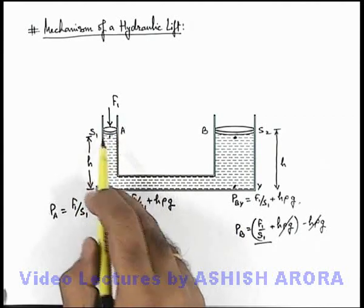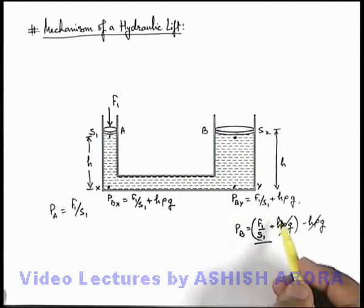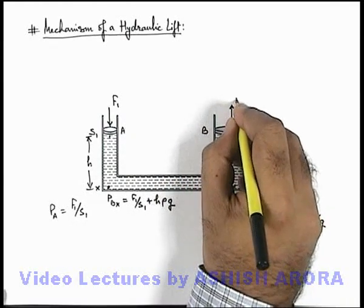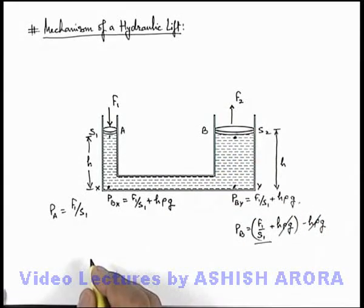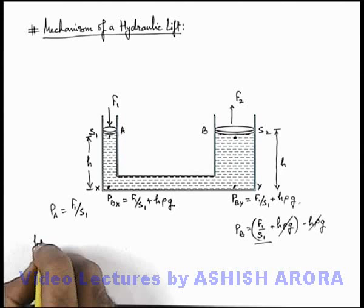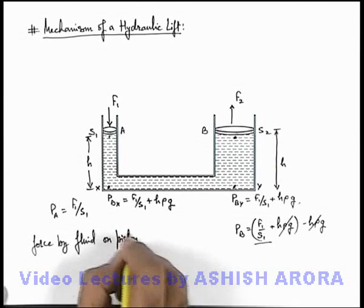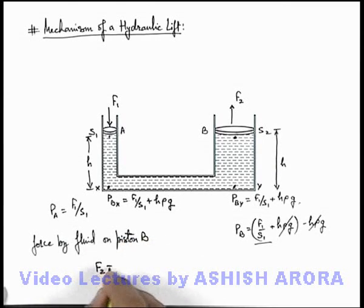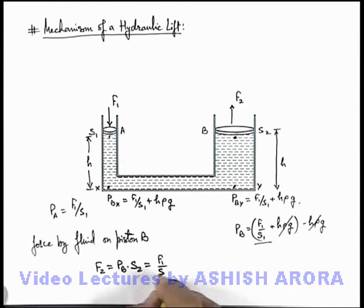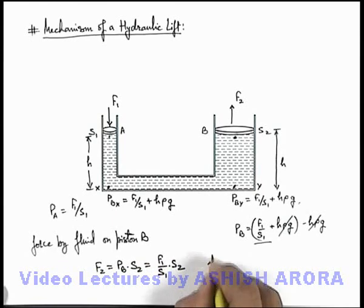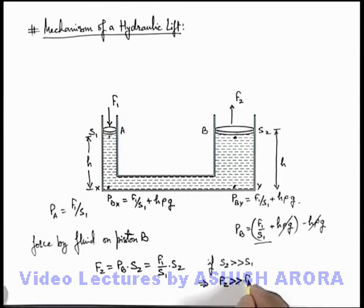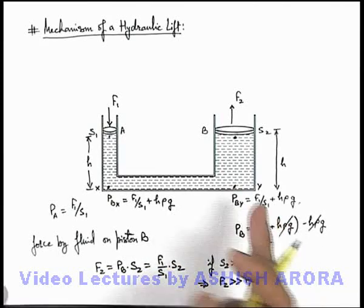So if this force is increased, the pressure at point A increases and correspondingly pressure at point B will also increase. This piston will experience an outward force F2. The force applied by the fluid on piston B is F2, which equals pressure at point B multiplied by S2, giving F2 = (F1/S1)·S2. Now if S2 is very much greater than S1, this implies the force F2 will be very much greater than F1. This is how the force is amplified by a large value in the ratio of the areas.